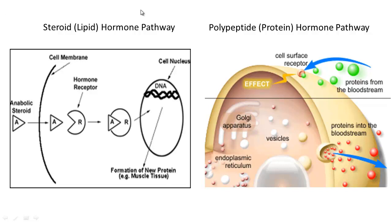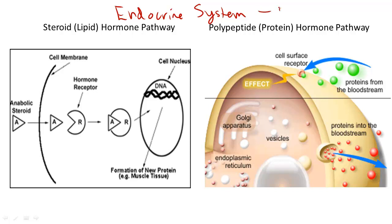Hormones are a central part of endocrine system function. It is how endocrine system glands report messages to and from different parts of the body, and they work closely with another system, the nervous system.